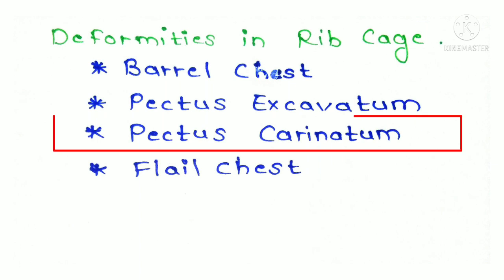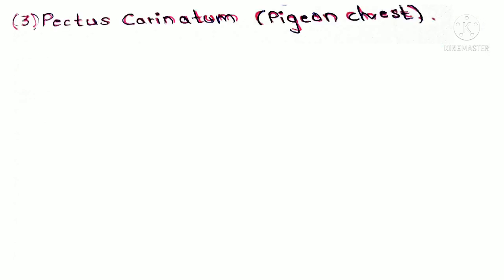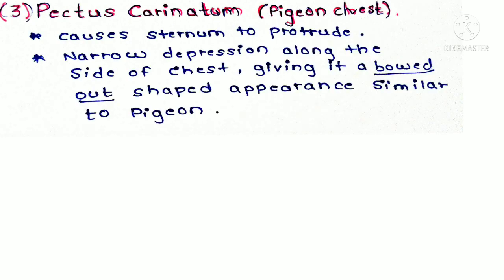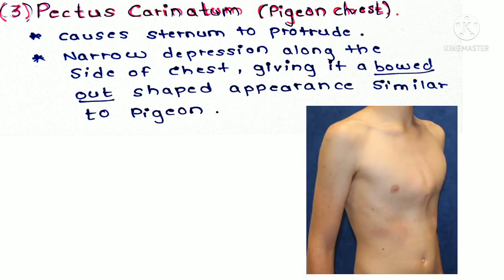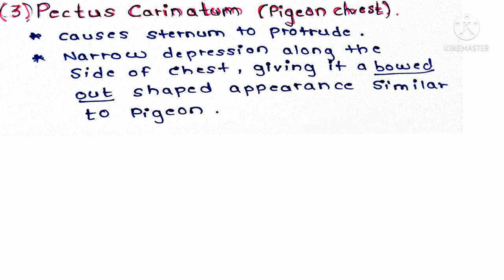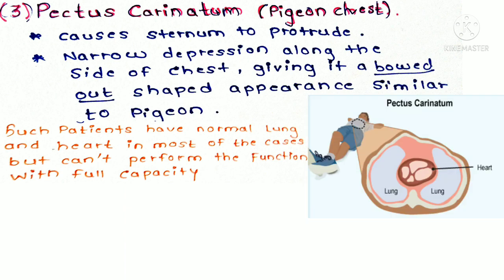The next deformity is pectus carinatum, also called pigeon chest. This condition causes the sternum to protrude, and a narrow depression is created along the sides of the chest, giving the chest a bowed-out appearance similar to a pigeon. People with pectus carinatum generally develop a normal heart and lungs.